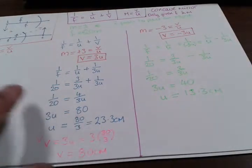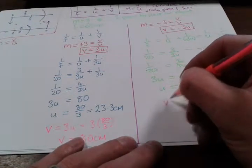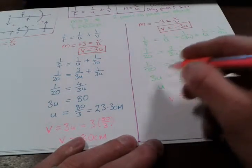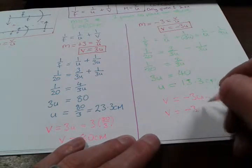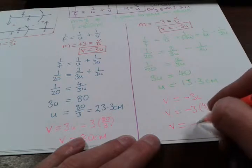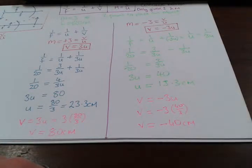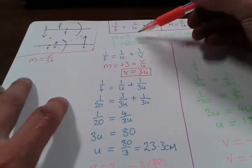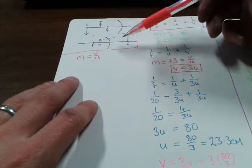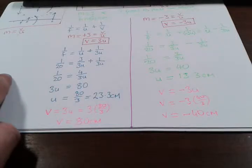Now let's work out where the virtual image is — the image distance. V equals minus 3U, and U equals 40 over 3, so V equals minus 3 times 40 over 3, giving V equals minus 40 centimetres. The virtual image is formed 40 centimetres behind the mirror. So using both pieces of information and knowing about ray tracing and the conditions for virtual and real images, we've solved for the object distance and image distance for both the real and virtual cases. And that's how you do those problems.